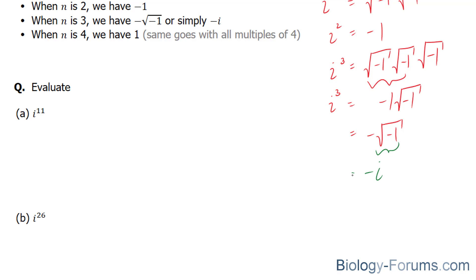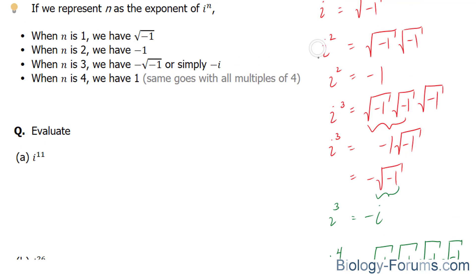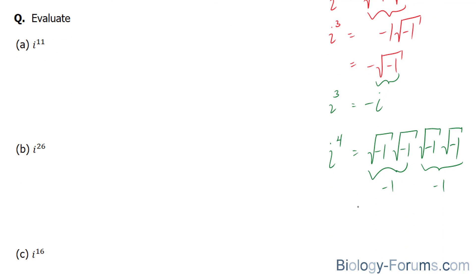negative i is equal to i to the power of 3. And lastly, if we were to fourth power i, we end up with the square root of negative 1 four times. This is equal to negative 1. This is equal to negative 1 due to this. That being said,